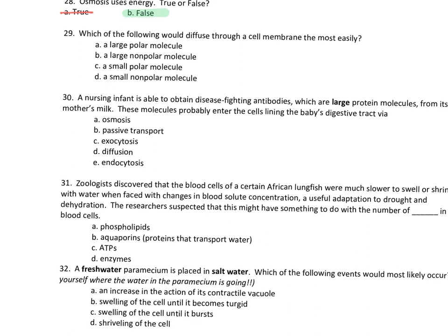Which of the following would diffuse through a cell membrane most easily? Small and nonpolar — D. Small and nonpolar — they diffuse easily. Oxygen, carbon dioxide — small and nonpolar. Small and polar — it does diffuse through the membrane but it's not the easiest to get through. Large and nonpolar? No. Large and polar? No — they require endocytosis.